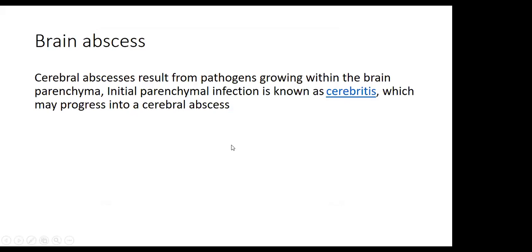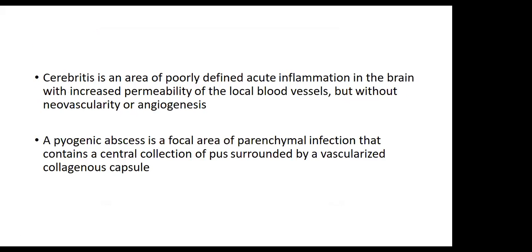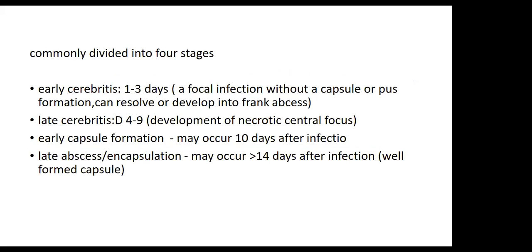Brain abscess: cerebral abscess results from pathogen growing within the brain. Initial parenchymal infection is known as cerebritis, which may progress into cerebral abscess. Cerebritis is an area of poorly defined acute inflammation with increased permeability of local blood vessels but without neovascularity. A pyogenic abscess is a focal area of parenchymal infection containing a central collection of pus surrounded by a vascularized collagenous capsule. It is divided into four stages: early cerebritis (day 1-3), late cerebritis (day 4-9), early capsule formation (~day 10), and late encapsulation (~day 14) with a well-formed capsule.